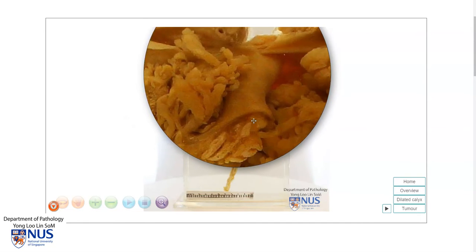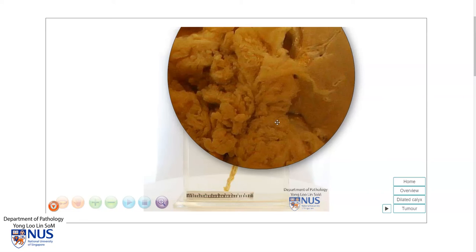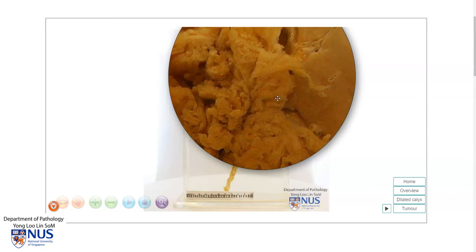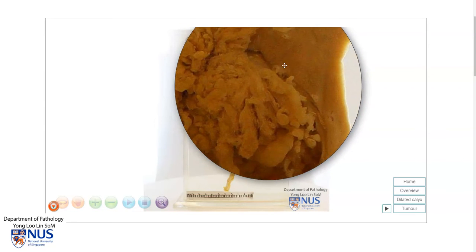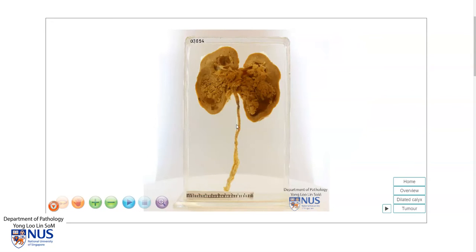We will also have to look very carefully and very closely at the interface between the tumor in the renal pelvis and the renal parenchyma, and sample this very thoroughly to see if there is invasion into the renal parenchyma. Quite often there may also be a sort of a field change with urothelial carcinoma also involving other parts of the urinary tract, so we would also have to examine the ureter as well as the bladder very thoroughly.